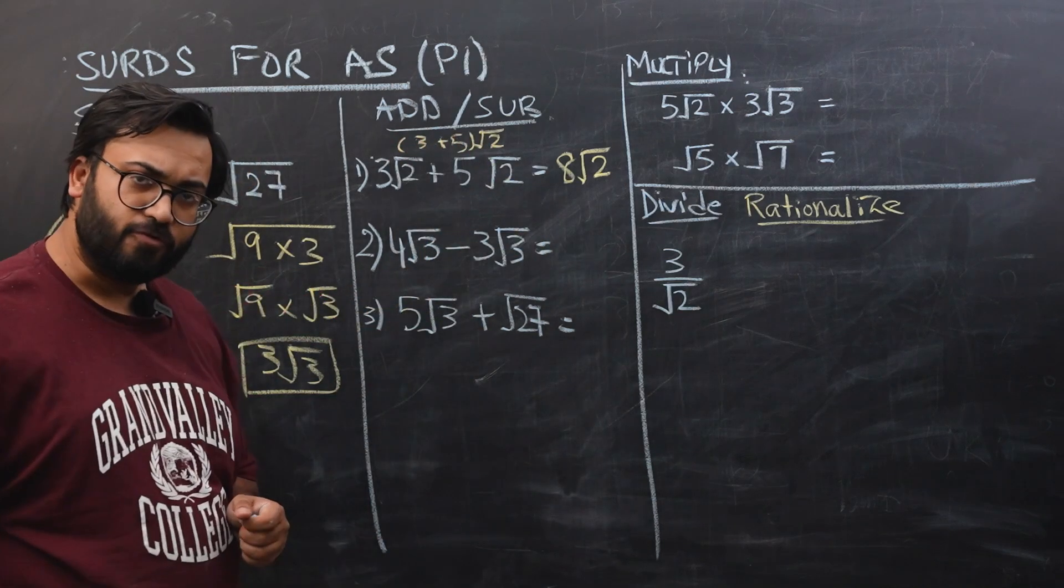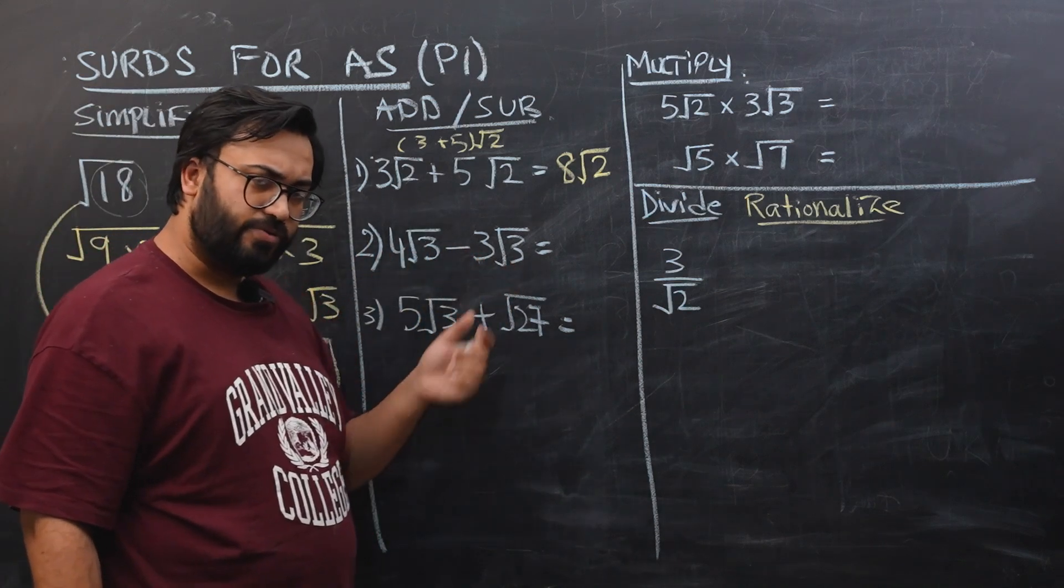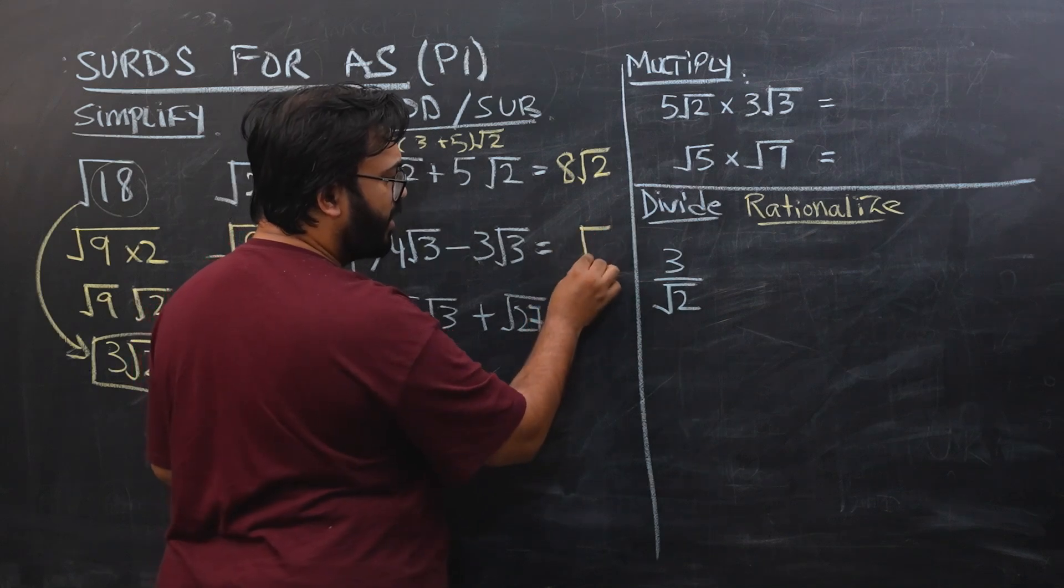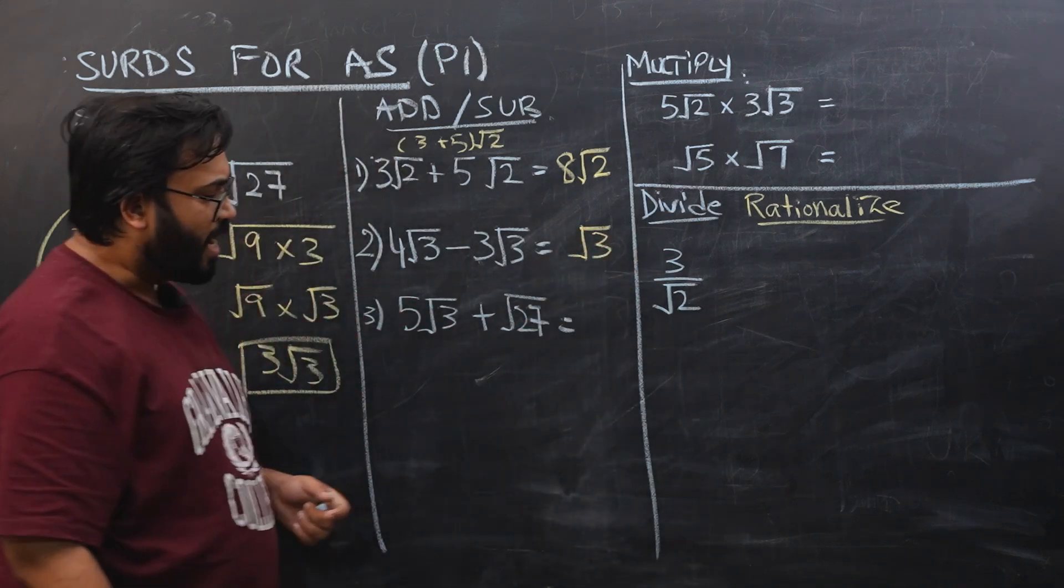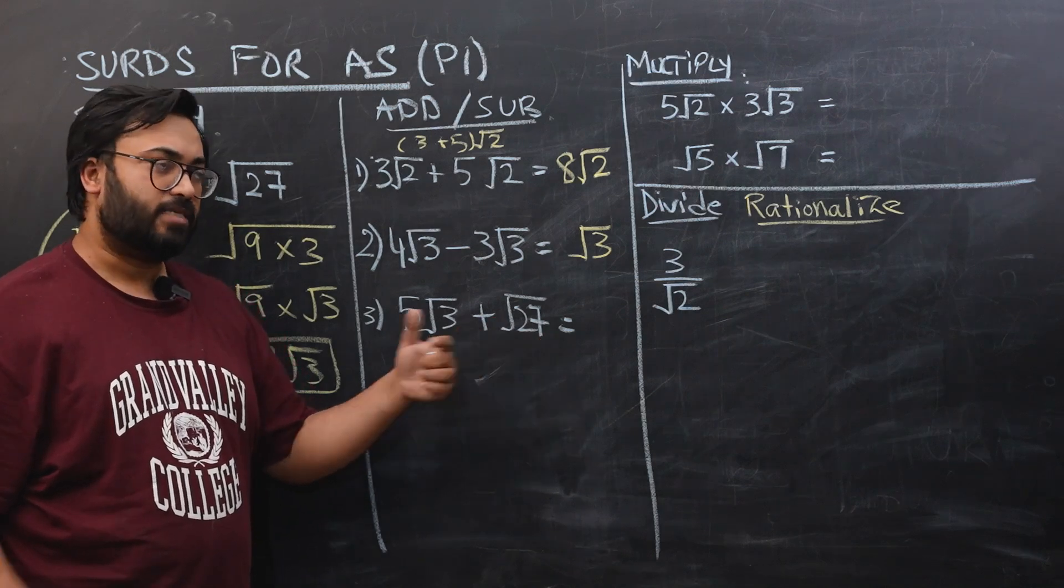4 square root 3 minus 3 square root 3. So that would be 4 under root 3 minus 3 under root 3. It would just be 1 under root 3. And now if they are different, they cannot be added. And sometimes they cannot be added directly, but we can manipulate them into getting added.